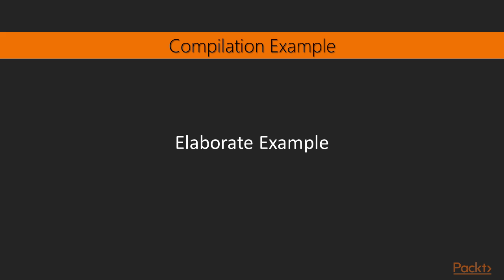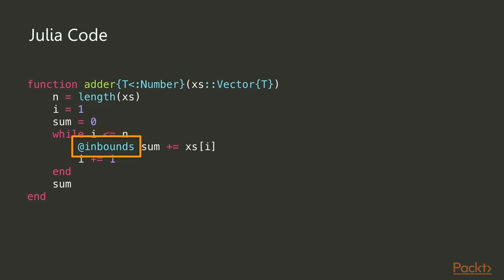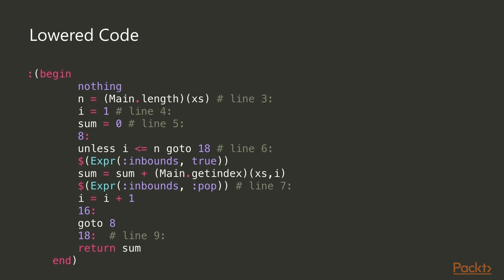Let's look at a more elaborate example where lowering is easier to see — a simplified version of the sum function. We take a vector `xs` as argument, loop over it, and add values into a sum variable. I've put the `@inbounds` macro there mainly to turn off bounds checking, which would add extra code and confusion; normally you'd put it there for performance when you're certain you're accessing the array within bounds.